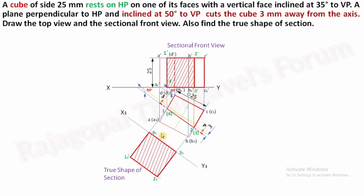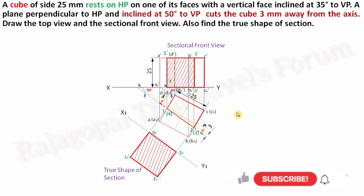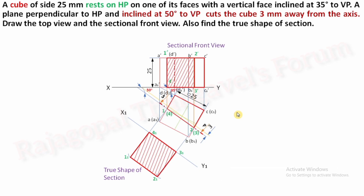Most of the time you may have a chance of making a mistake in the section plane condition. I always recommend this procedure: first draw a 50 degree inclination line exactly on the axis, then shift the section plane 3 mm away from the axis by drawing a parallel 50 degree line. I hope you understood this problem very well. If you have any query or doubt, put it in the comment box and I will answer. Check the description box or channel playlist for remaining problems on section of solids. If you liked this video, click like, share with friends, and subscribe to the channel. Thank you.